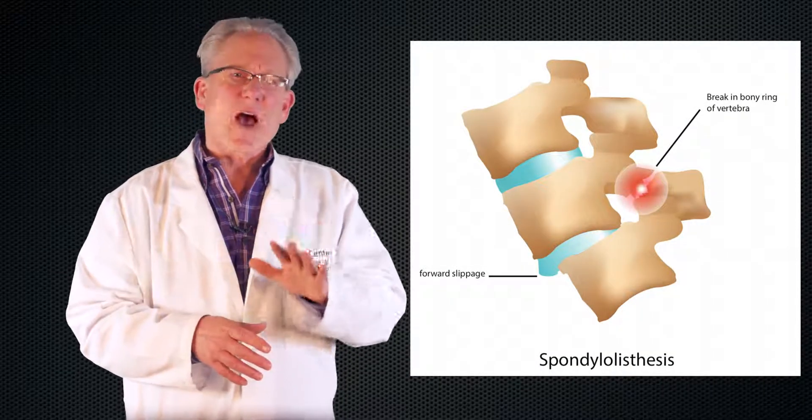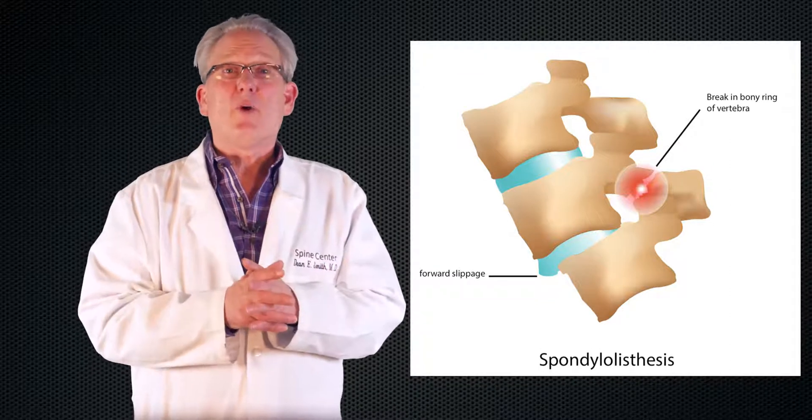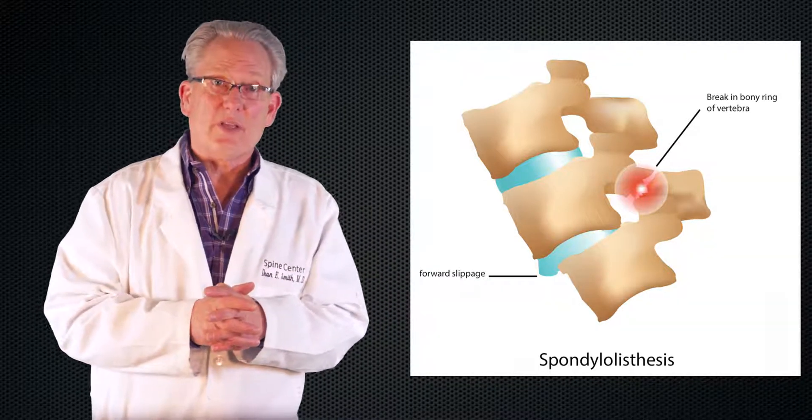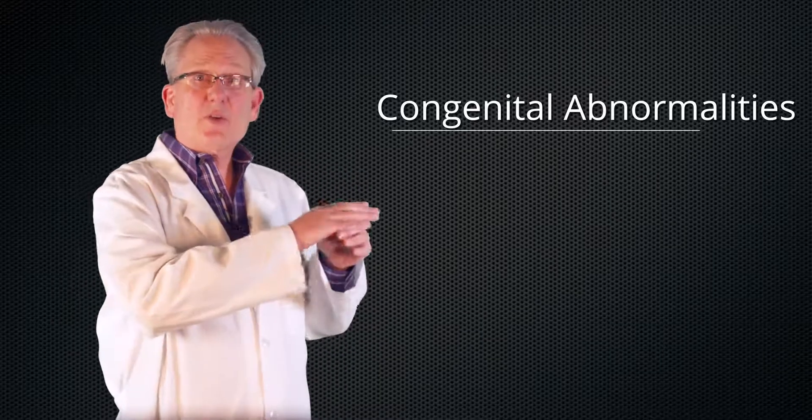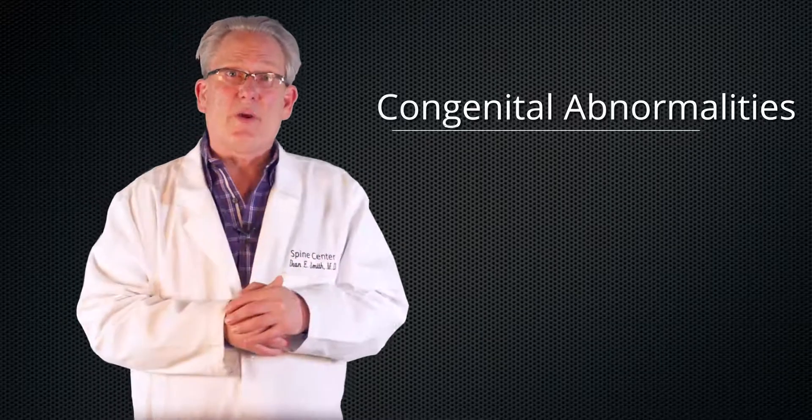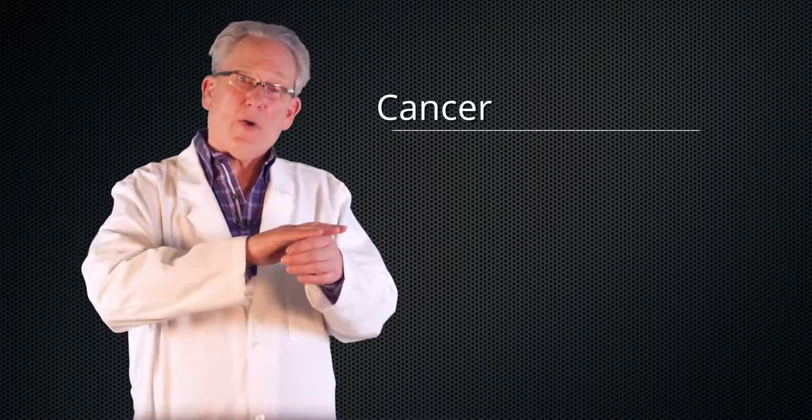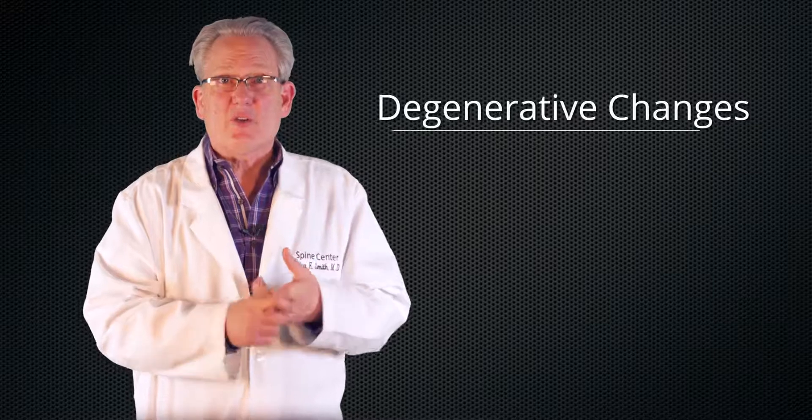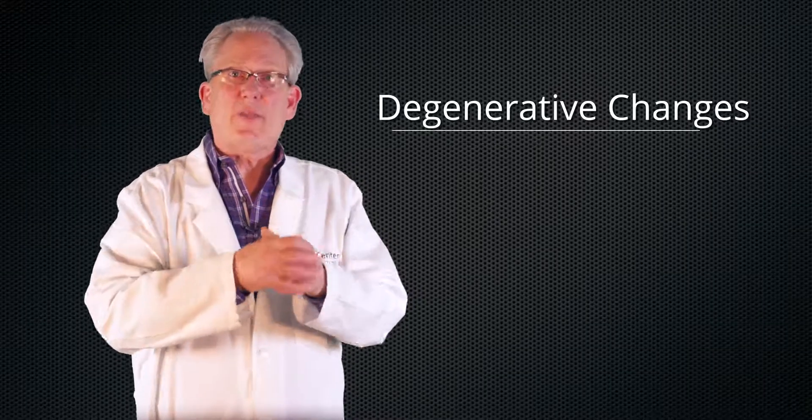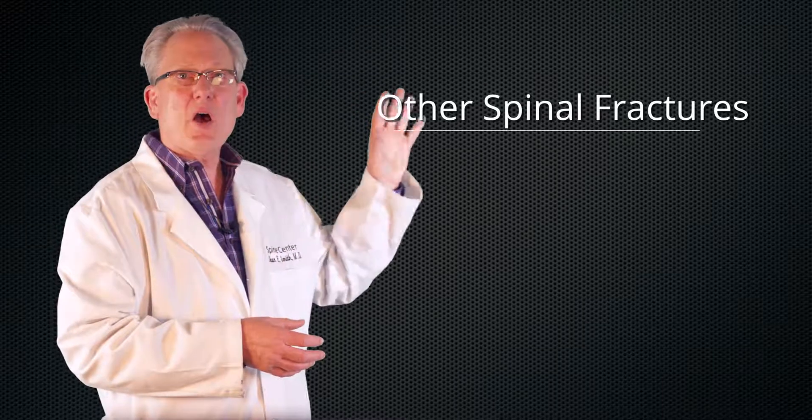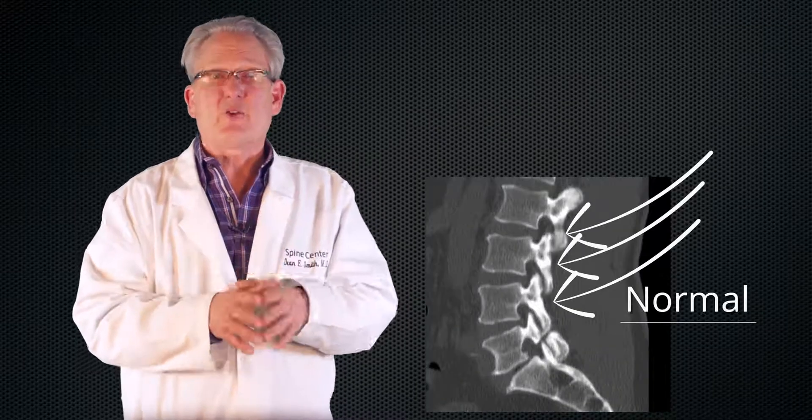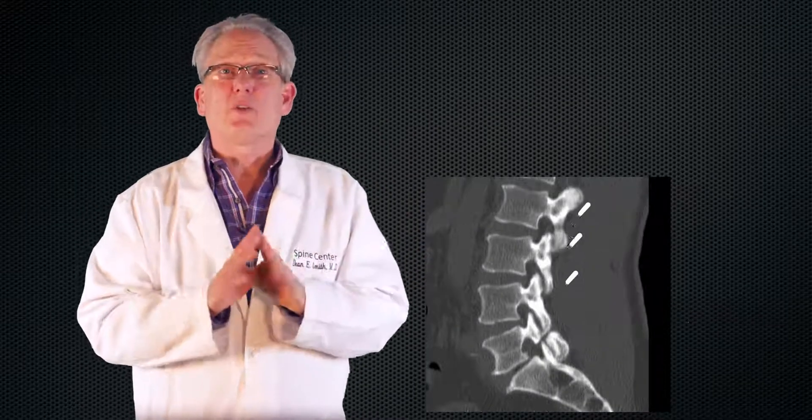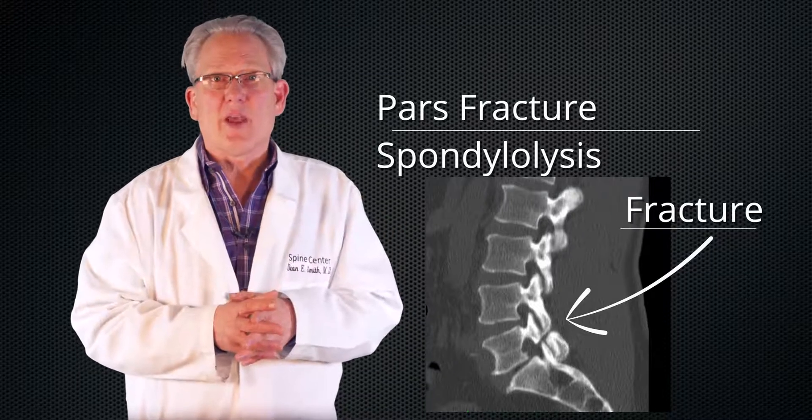There are five categories of pathologies which can lead to spondylolisthesis. These include congenital abnormalities - you can be born with something which can lead to instability where one bone will slip on the other one. Cancer can eat away part of the bone. You can have degenerative changes where the joints wear out and one bone will slip on the other one. You can have fractures in other locations in the spine that can allow one bone to slip on the other. Or you can have a fracture in the pars, which is called a spondylolysis, which is the topic of today's video.